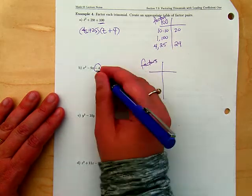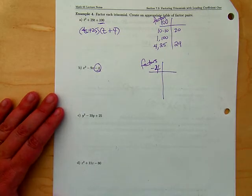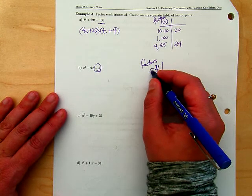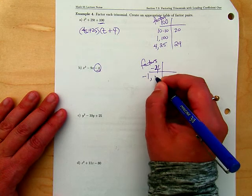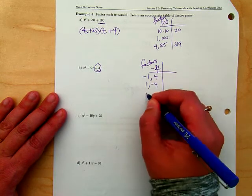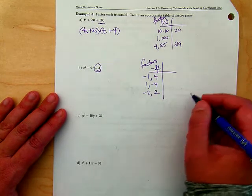Looking at the last number, negative four. I'm going to think of all the factors. In order to get a negative, they have to be opposite signs: negative one times four, one times negative four, negative two times two, and there's no other way to write that.